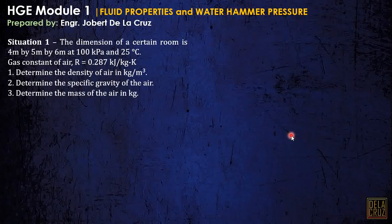Let's begin with this sample problem. Situation 1: The dimension of a certain room is 4 meters by 5 meters by 6 meters at 100 kilopascal and 25 degrees Celsius. Given the gas constant of the air, that is 0.287 kilojoules per kilogram kelvin. We are required to determine the density of the air in kilograms per cubic meter. Basic, for part 1.